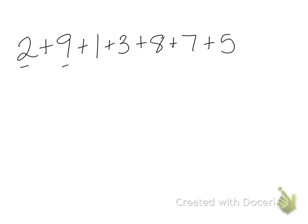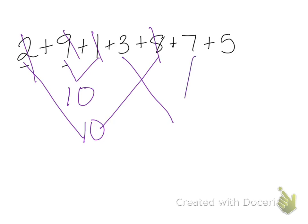So for example, 9+1, I know equals 10. I know that 2+8 equals 10. And I can cross off the numbers as I use them. And then I know that 3+7 equals 10.